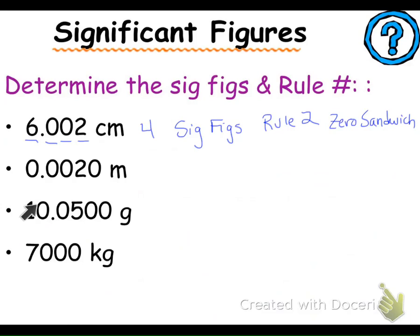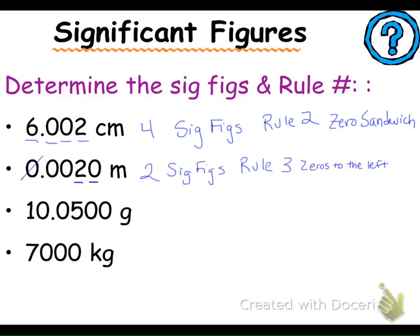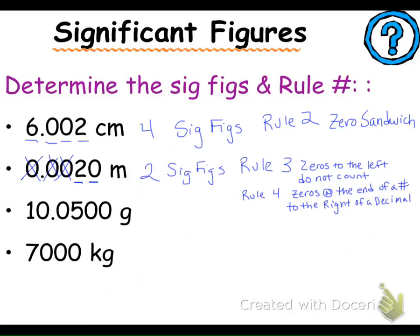On the next one there are some left-handed zeros, so those are not significant, and there's one right-handed zero, so there are two significant figures — rule three: zeros to the left do not count. And then rule four: zeros at the end to the right of the decimal also count. On the next one you've got the zero sandwich rule as well as zeros to the end, so rule two and rule four are in play.